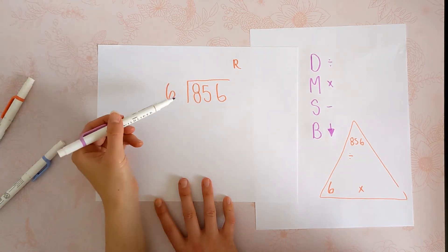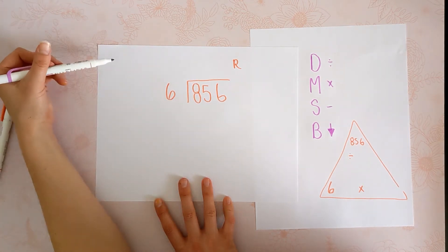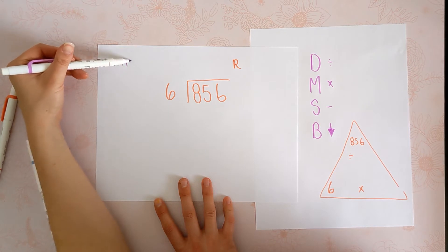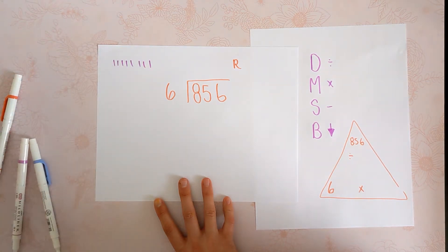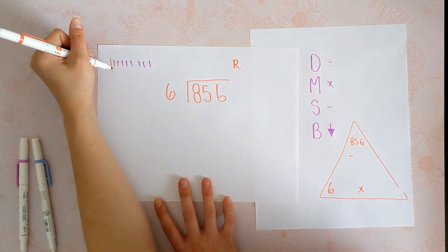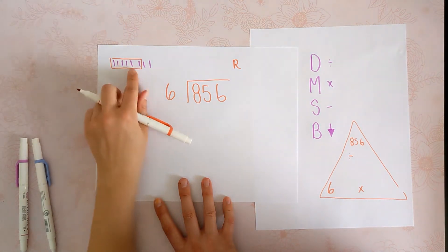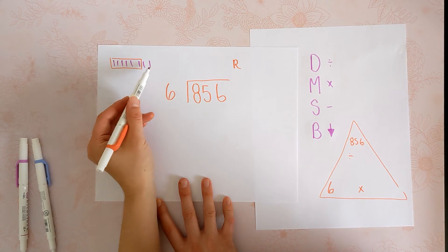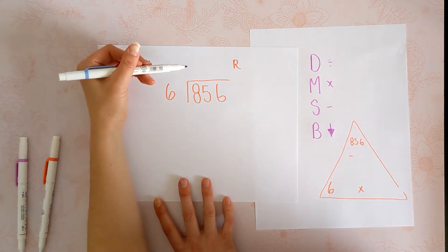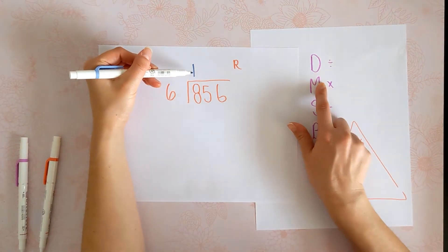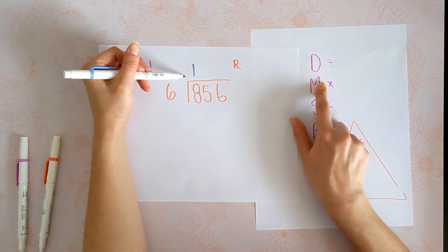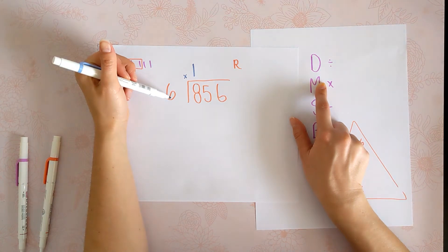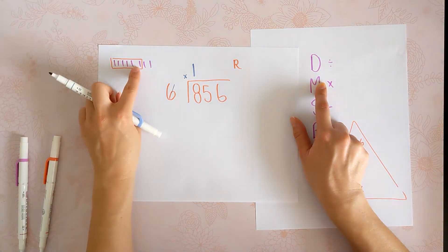So let's start. 8 divided by 6. In other words, how many 6s can fit into 8? Well, just 1, right? Because 2 groups of 6 would be 12 and we don't have 12 to work with. The closest we can get is 1 group of 6. So we'll put that 1 up here and then we're going to multiply using the last thing we touched. 1 times 6 is 6.